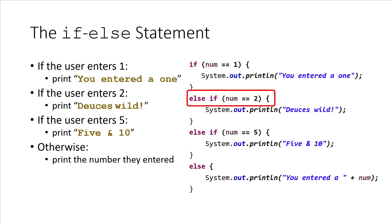And then if that condition doesn't hold, else if num equals 5, we print 'Five and 10'. And then the else clause handles the otherwise case. In every case that doesn't match one of the conditions above, we'll print 'You entered' and then that number.